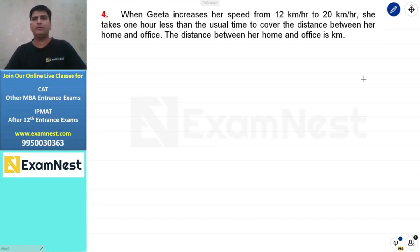When Geeta increases her speed from 12 km per hour to 20 km per hour, she takes one hour less than the usual time to cover the distance between her home and office. Let's say V1 is 12 and V2 is 20.